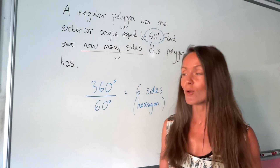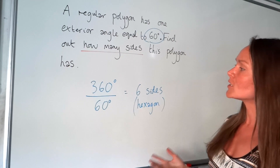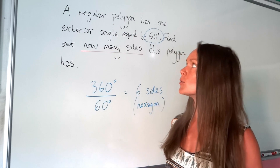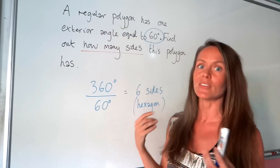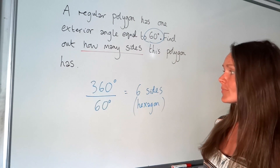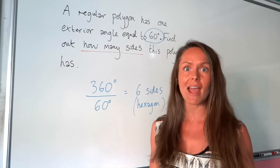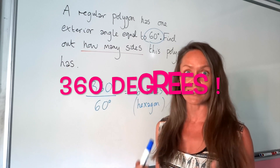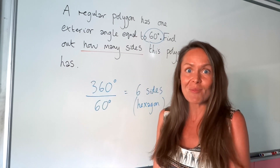It's really useful to know the names of all these polygons. That's how you work out the number of sides — you just do 360 divided by one exterior angle. Remember, that only works for regular polygons, when the sides and the angles are equal in size. Just remember that all-important rule: the sum of exterior angles in any polygon always adds up to 360 degrees. That's all from me for today — goodbye.